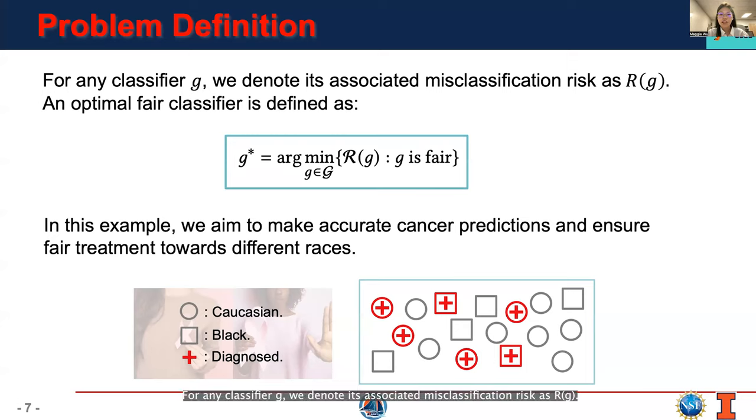For any classifier g, we denote its associated misclassification risk as R(g). An optimal fair classifier is defined as below. g* is the arg minimizer of R(g), where g is fair. In this example, we aim to make accurate cancer prediction and ensure fair treatment toward different races.